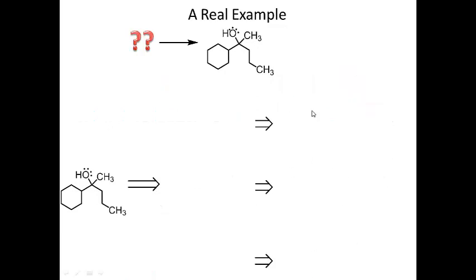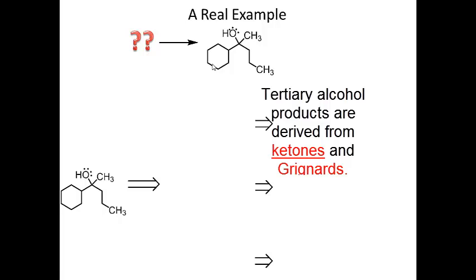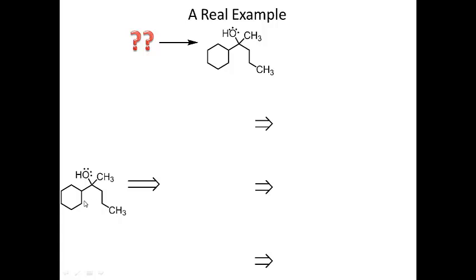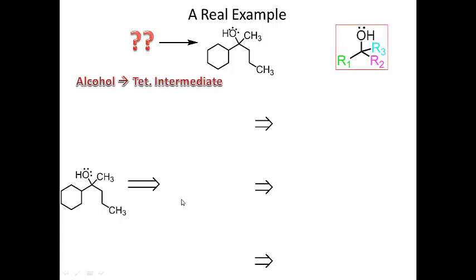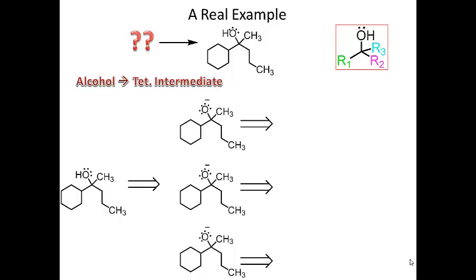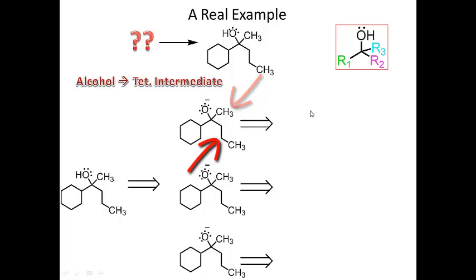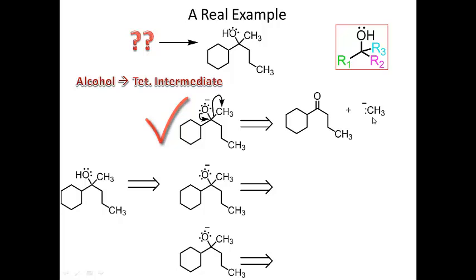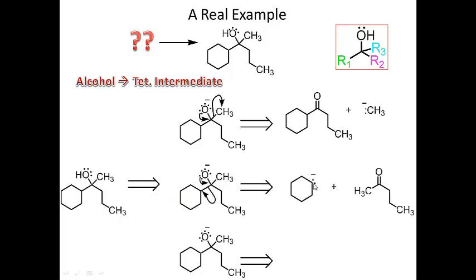Now a real tertiary alcohol example. As a rule of thumb, if you start with a tertiary alcohol, your carbonyl starting material is going to be a ketone. Starting from the alcohol and reversing to the tetrahedral intermediate, we have three groups that can eliminate, giving three possible elimination pathways — all correct. If I eliminate CH3, I get this ketone and CH3 picks up a pair of electrons. If I eliminate the cyclohexane ring, I get a ketone where CH3 and the propyl group remain attached to the carbonyl.